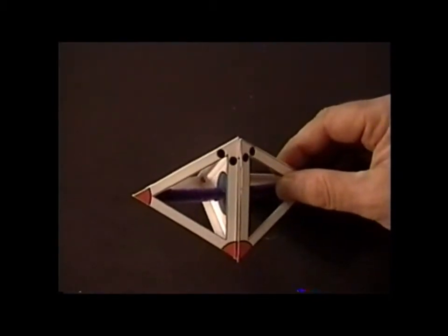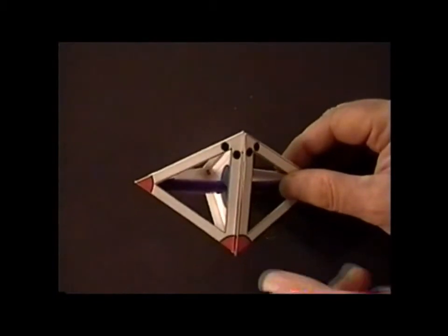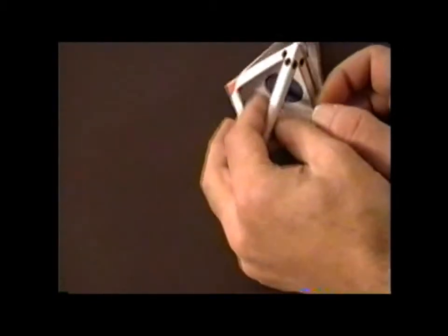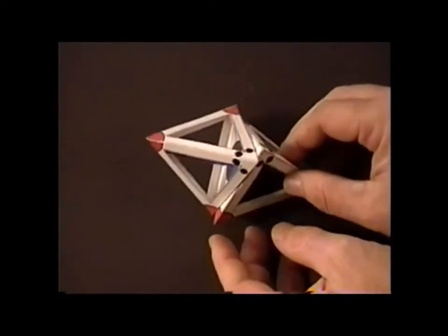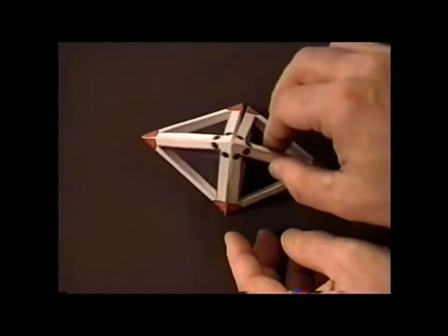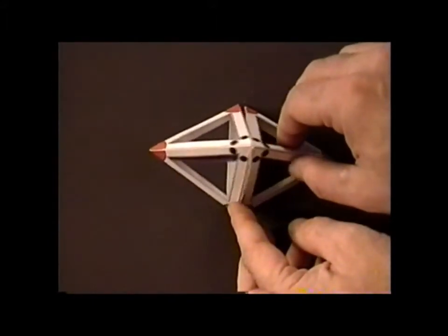When we do this, the symmetry is reduced from D3H to C2V. So you can kind of see the seesaw goes along this way, or sometimes called a teeter-totter.